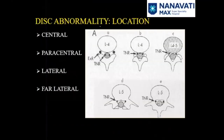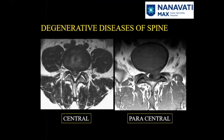Now let's understand disc abnormality description based on location. In addition to posterior herniation, what you need to describe is whether it is central, paracentral, lateral, or far lateral — based on how they are located in relation to the thecal sac and the exiting and traversing nerve roots. Here are real life examples.